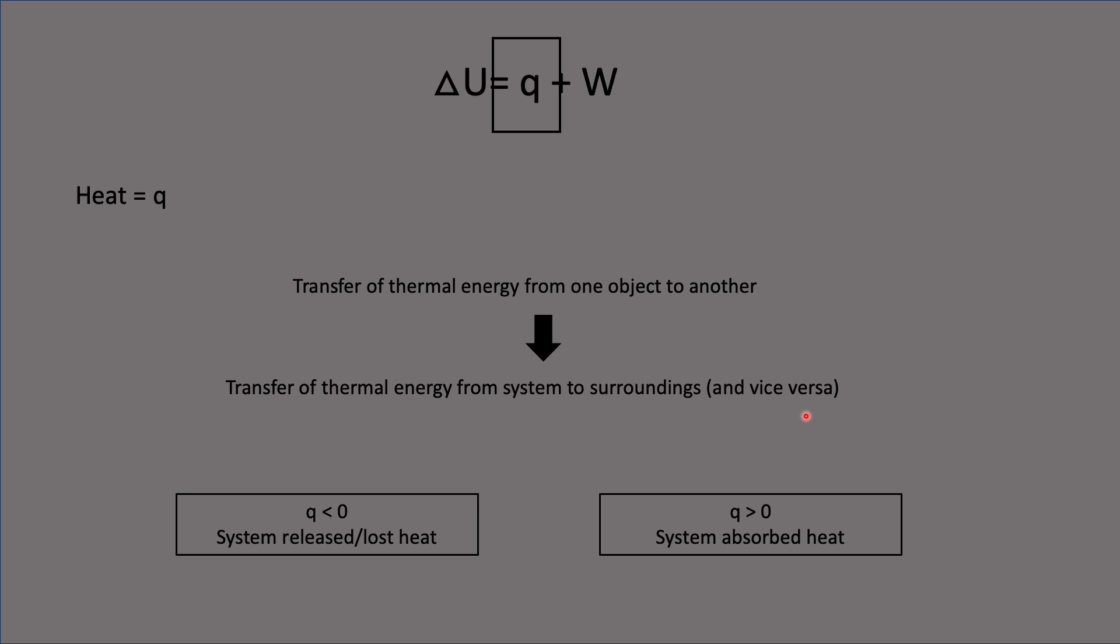Once again, we have our cases that we want to look at. What are we dealing with when q is negative? What are we dealing with when q is positive? When q is negative, the system is losing heat or it's released heat into the surrounding. When q is positive, the system has absorbed heat. It might be a bit difficult to remember all these cases, even for the delta U. You're going to see it for work as well. But don't worry, at the end, I'll give us a little bit of a trick on how I tend to remember this whenever I'm a bit stuck.